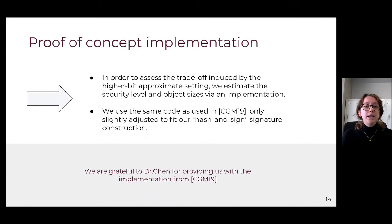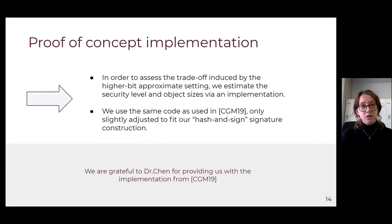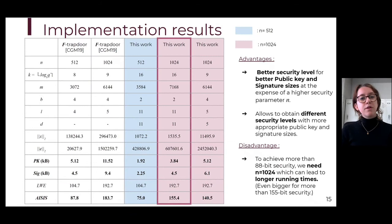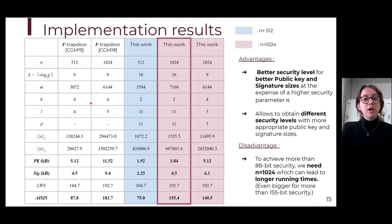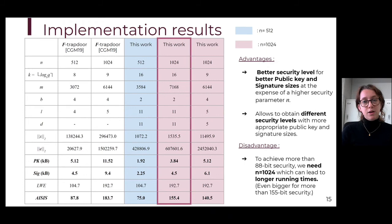To assess this trade-off, we use a proof-of-concept implementation — the same one used in the 2019 paper for the F-trapdoor construction — and we are very grateful to Dr. Chen who provided us with this implementation. Here you can find the results: on the right, the three columns are parameter sets from our work, and on the left are results from the F-trapdoor construction. The rightmost column is an earlier result presented in our paper; however, we recently found better results shown in the two other columns.